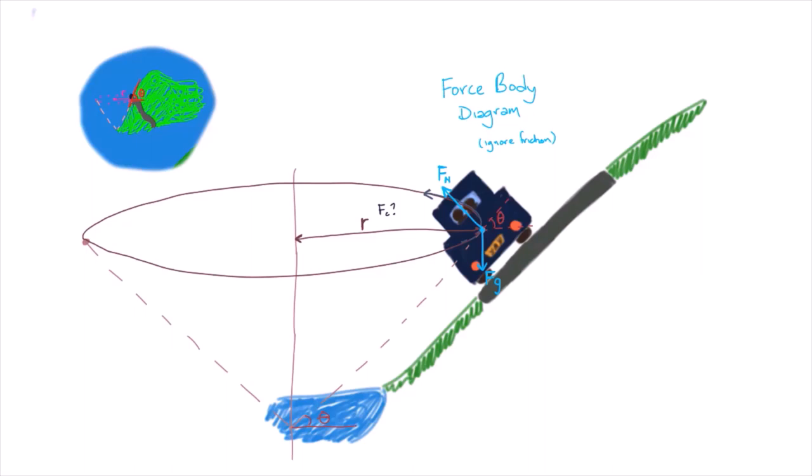To get the vertical component of the normal force, we can draw out a vector triangle, showing both the vertical component and the horizontal component, which together add up to the total normal force. The angle between the normal force and the vertical is theta, the same as the angle of the banked track. This can be shown using geometry.